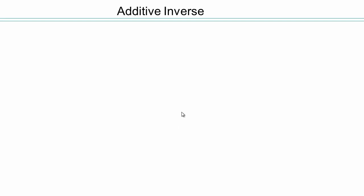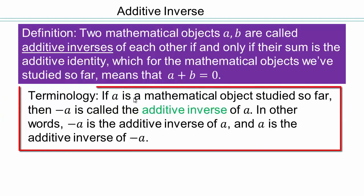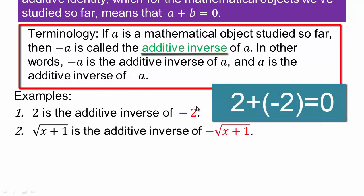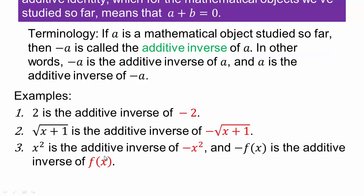Before we do more subtraction, let's discuss some additional concepts that will aid the process. Two objects A and B are called additive inverses of each other if and only if their sum is the additive identity. Where 0 is the additive identity, if A plus B equals 0, then A and B are additive inverses. So A is the additive inverse of negative A, and vice versa — for example, 2 is additive inverse of negative 2 because 2 plus negative 2 is 0. Similarly, the square root of x plus 1 and its negative, x squared and negative x squared, and negative f(x) and f(x) are all pairs of additive inverses.